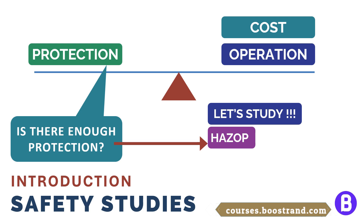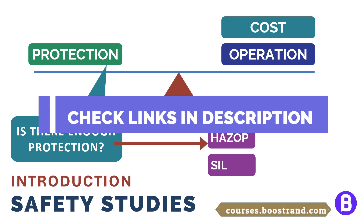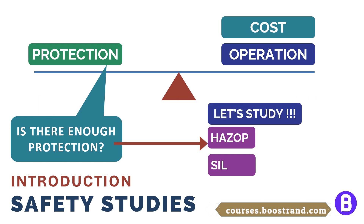For even more critical points, we may need to conduct a further study against the current layers of protection and check their reliability against the severity of the deviations they are addressing. Based on the result of this study, we shall end up determining the SIL rating — or safety integrity level rating — of the shutdown protection system instruments and shutdown valves.